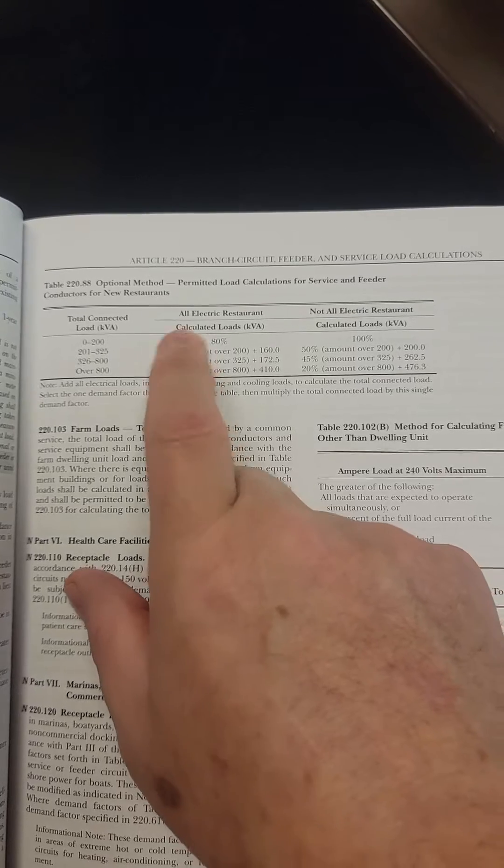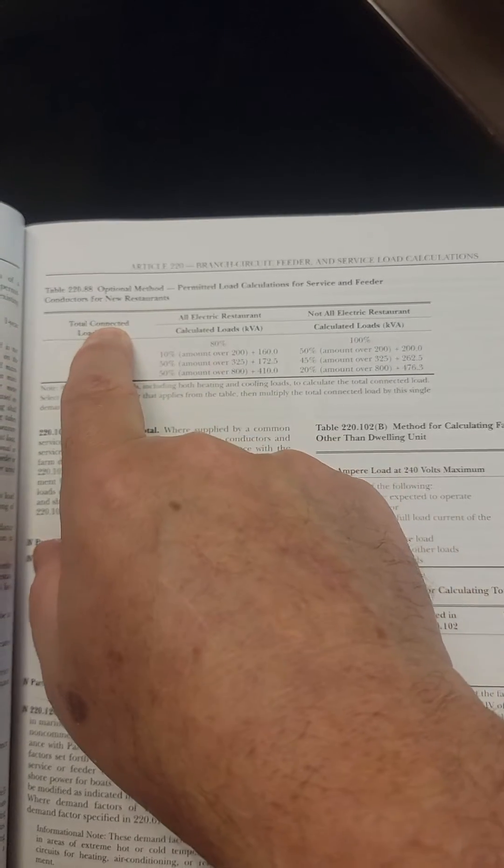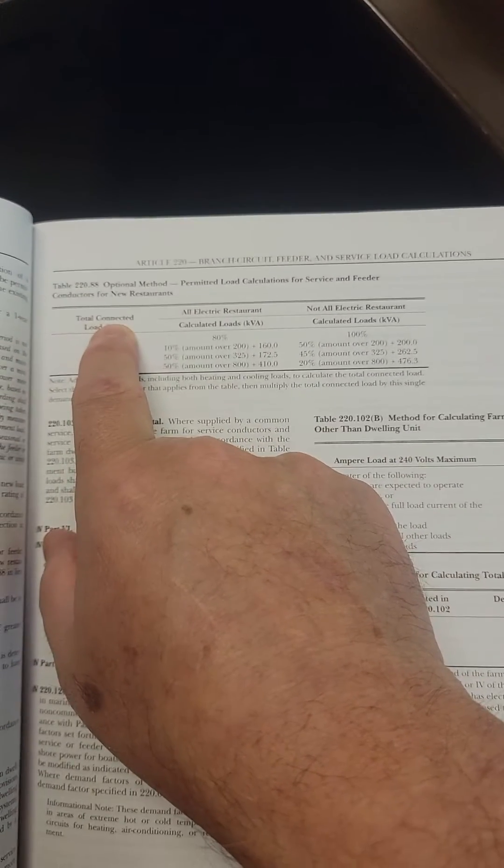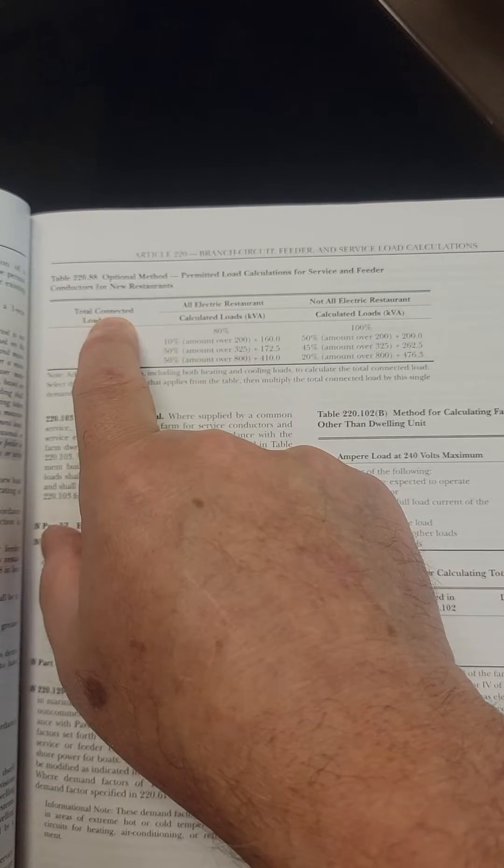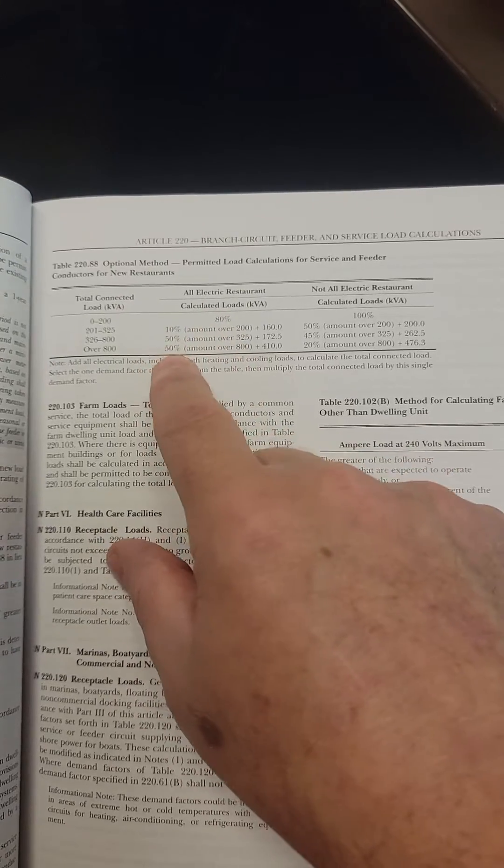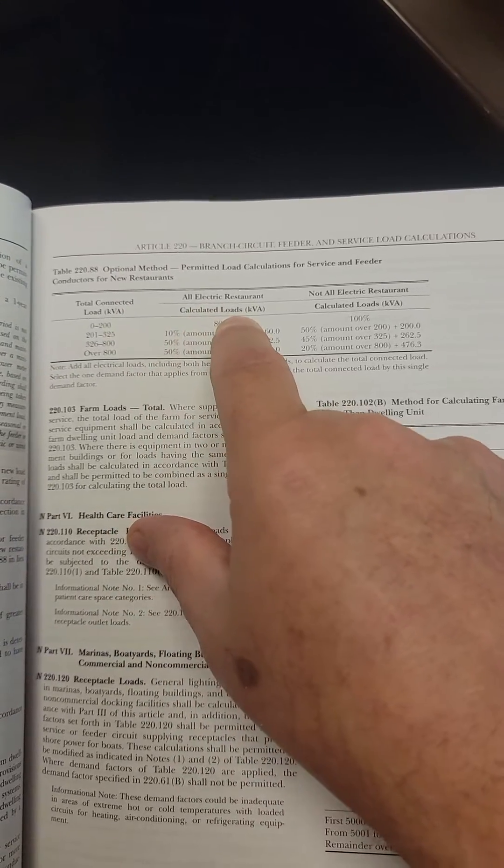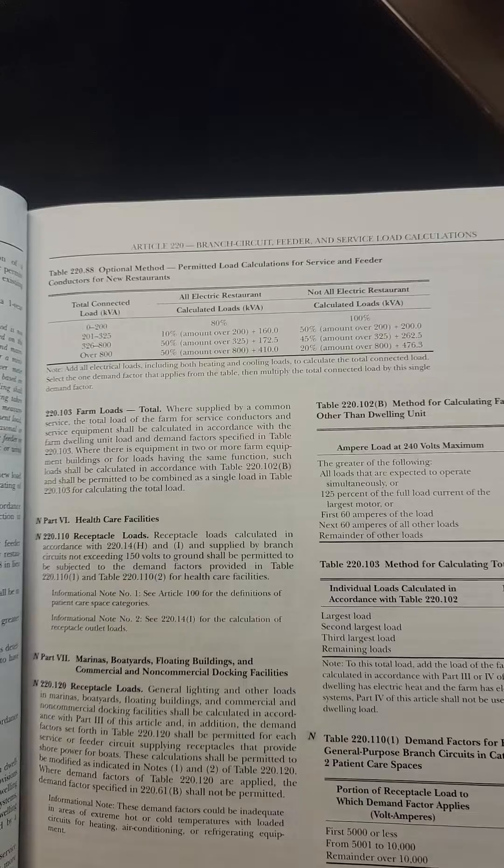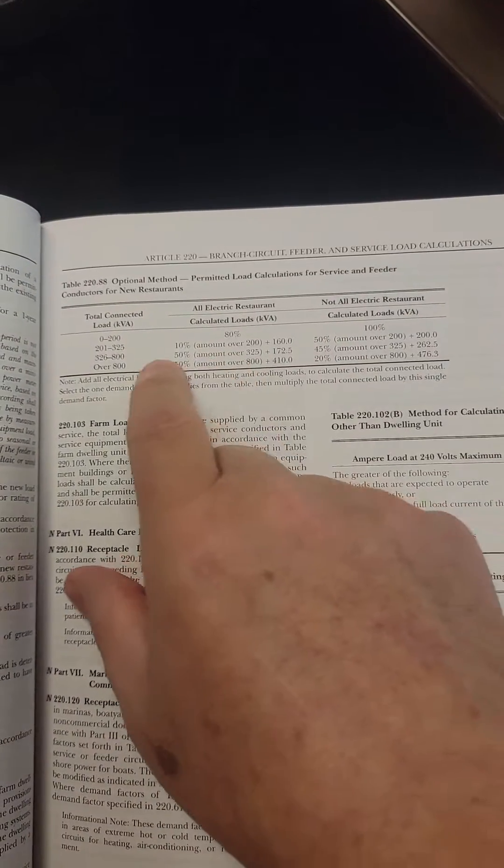Typically on an exam, they will give you the actual connected load. That is the value that comes from the engineer or on the exam question. And of course, the resulting value after you apply some of these percentages is the calculated load, and that's after you've applied any of these allowances here.